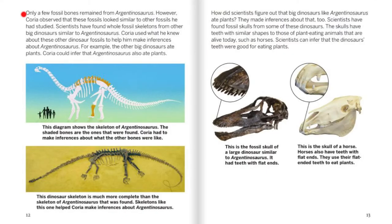Only a few fossil bones remained from Argentinosaurus. However, Correa observed that these fossils looked similar to other fossils he had studied. Scientists have found whole fossil skeletons from other big dinosaurs similar to Argentinosaurus. Correa used what he knew about these other dinosaur fossils to help him make inferences — for example, since the other big dinosaurs ate plants, he could infer that Argentinosaurus also ate plants. This diagram shows the skeleton of Argentinosaurus; the shaded bones are the ones that were found, and Correa had to make inferences about what the other bones were like.